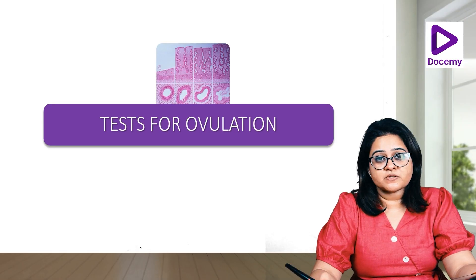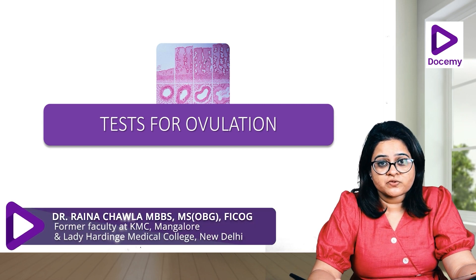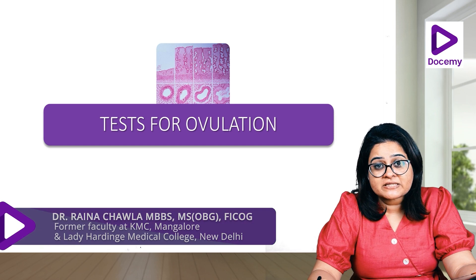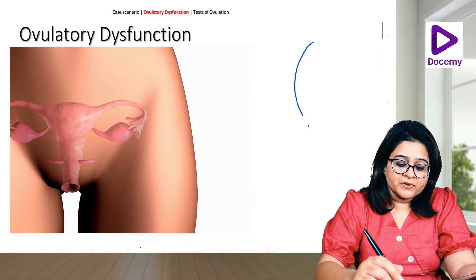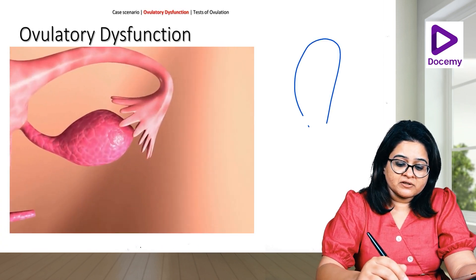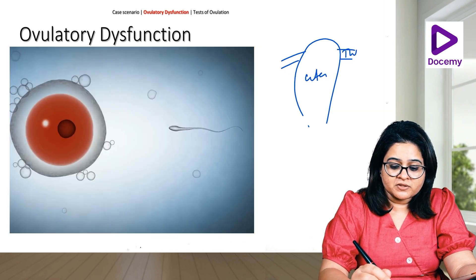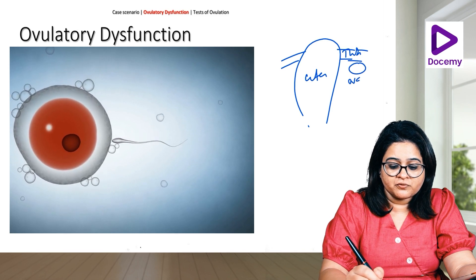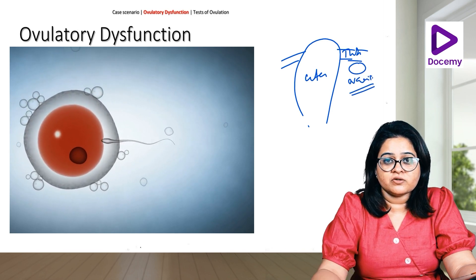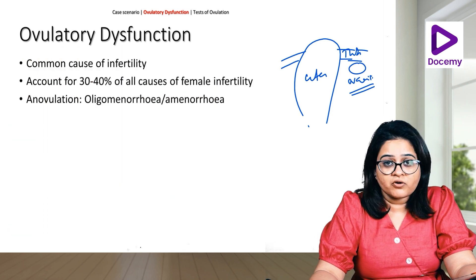When a patient comes to us who is sub-fertile, one of the preliminary tests we do is to check for ovulatory function — whether she is ovulating or not. For an infertile patient we have several things to check: we have to check the uterus, the tubes and their patency, and the ovaries — whether she is ovulating or not. In this session we will be discussing tests for ovulation.